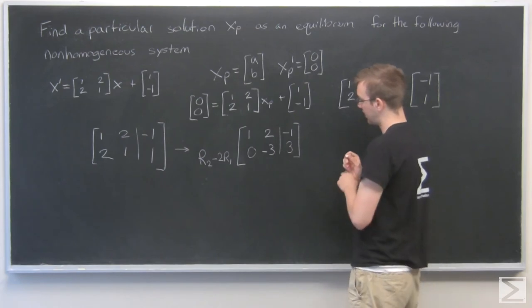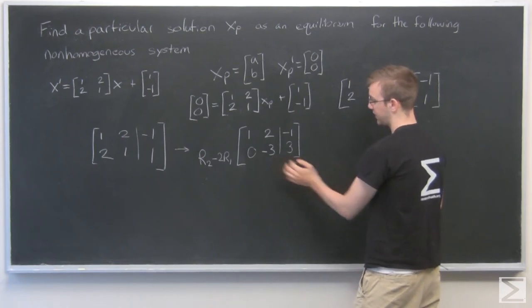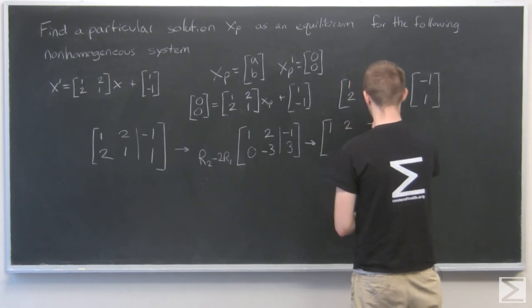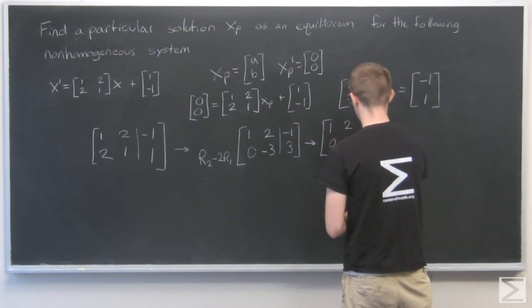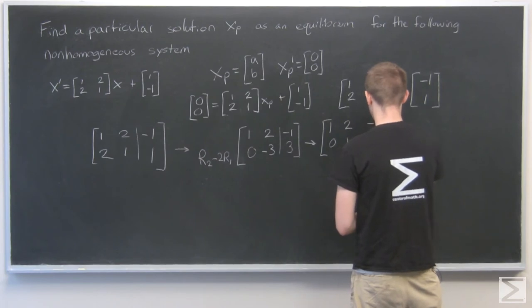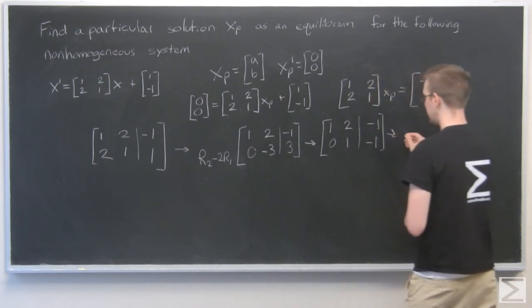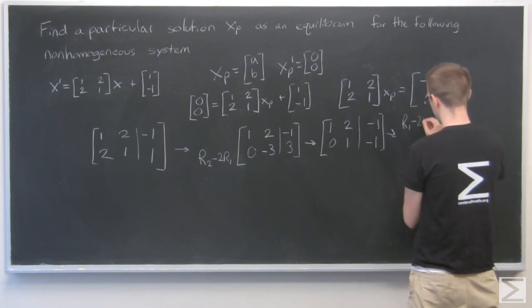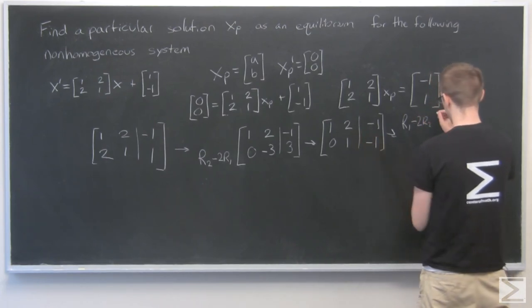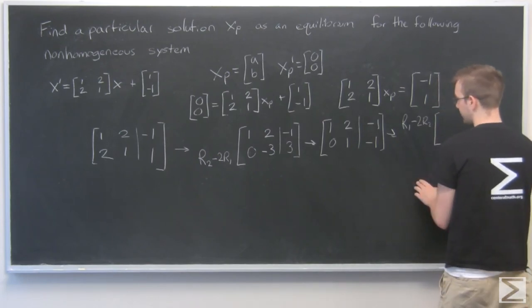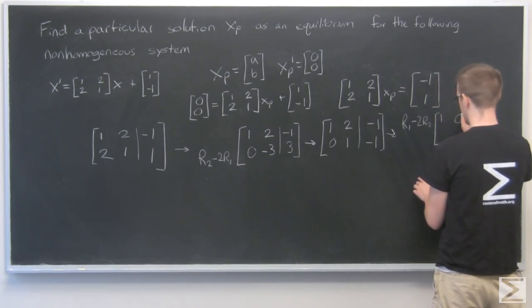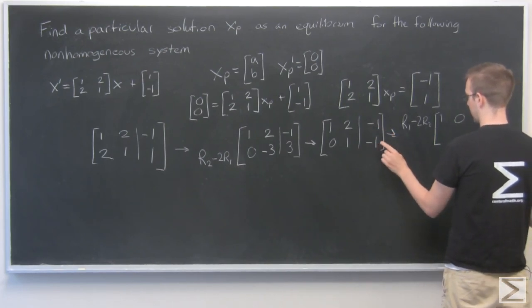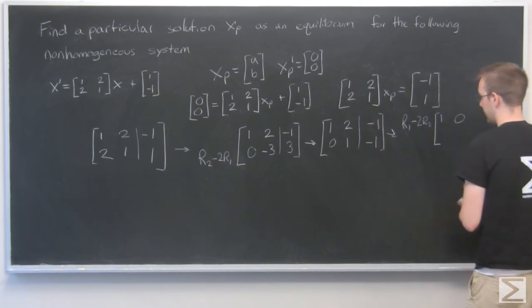Now I'm going to divide this by negative 3, so I'll do that. And finally, I'll take row 1 minus 2, row 2, and that should get rid of here. So, 1 minus 1 minus 2 times minus 1, that's minus 1, plus 2, that's 1.